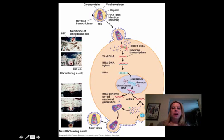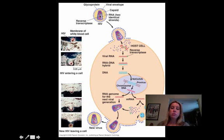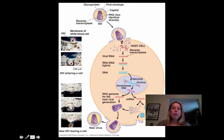You've got your HIV — human immunodeficiency virus — and it has that envelope. It's going to fuse with the host cell and dump its contents inside. The red you see is the RNA. It then uses those little green molecules, which are the reverse transcriptase enzymes, to make double-stranded DNA.